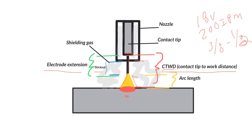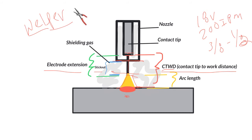Stick out is how much the wire sticks out beyond the actual nozzle. If you use a pair of welpers — weld helper pliers — they have a wire-cutting side. Flush the pliers up to the nozzle and it'll cut the wire to the perfect stick out.